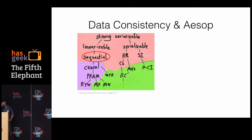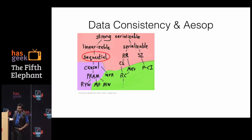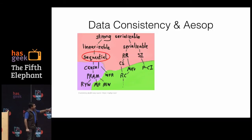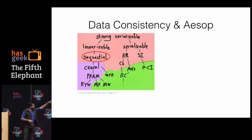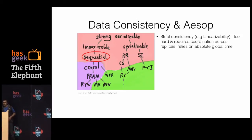In terms of the consistency model that ASOP supports: there is a consistency model map from the Jepsen website by Kyle Kingsbury that lays out various consistency models — the strongest at the top, weaker ones towards the bottom. Read committed is low on consistency but high on availability. Strict consistency like linearizability is too hard and requires coordination across replicas. Linearizability says that if you execute a write, the next read across any of the replicas will return the same result — super hard to implement. Even Google Spanner, which got close, needed atomic clocks and GPS-synchronized clocks to achieve global time synchronization.